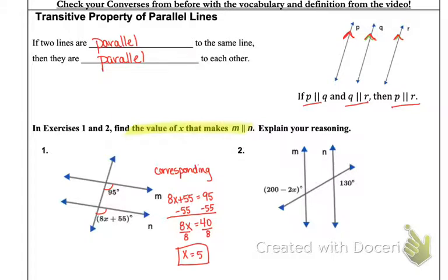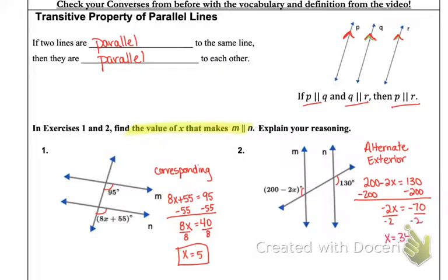On number 2, the two angles that they gave us are alternate exterior angles. If those lines are parallel, the alternate exterior angles have to be congruent, which means they have the same measure. So we're going to set those equal to each other and solve. Go ahead and pause if you haven't gotten all that written down.